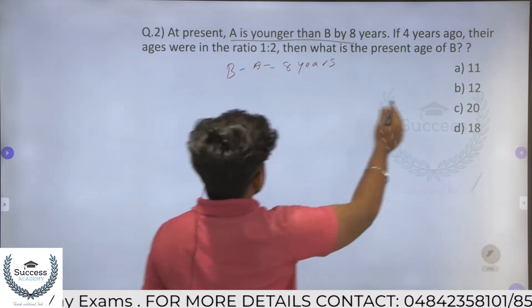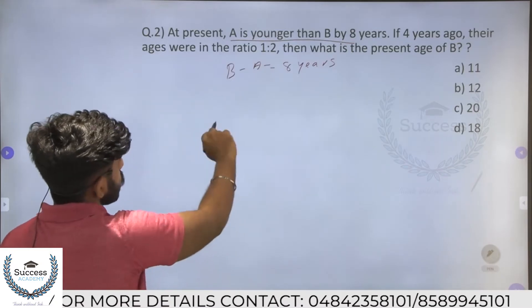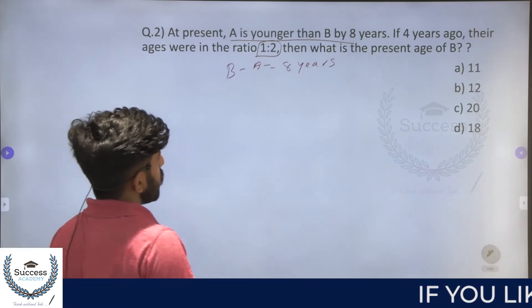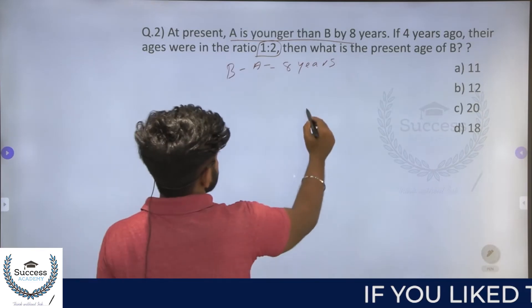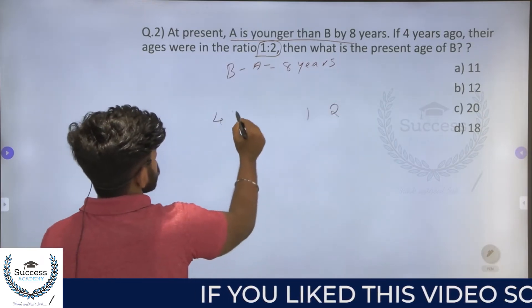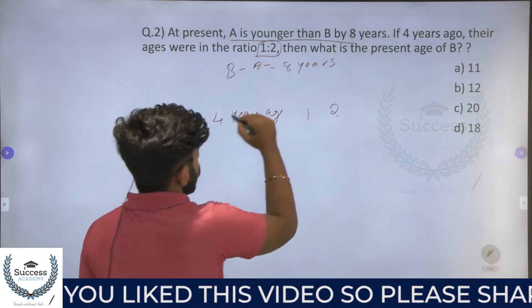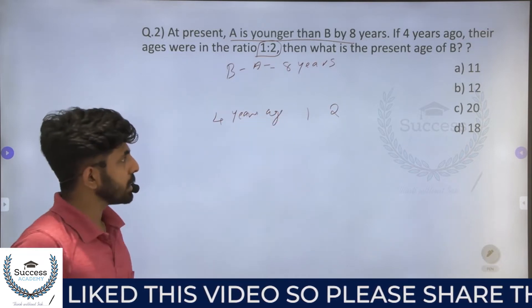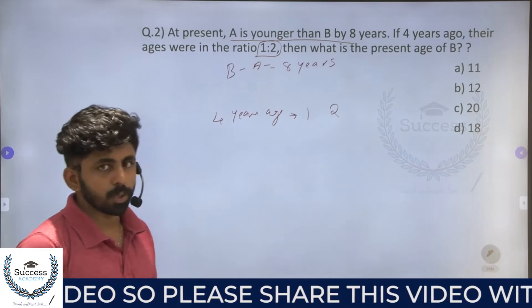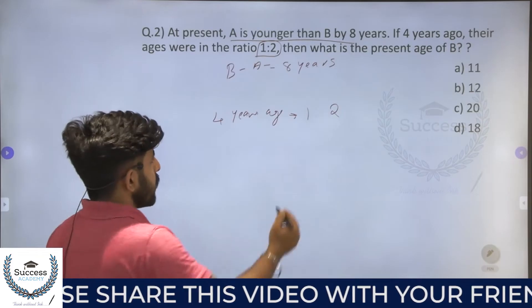If 4 years ago their ages were in the ratio 1 is to 2 — that is, 4 years ago the ratio was 1 is to 2 — find the present age of B.